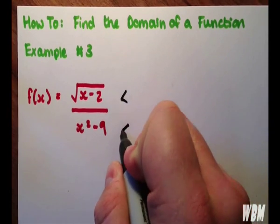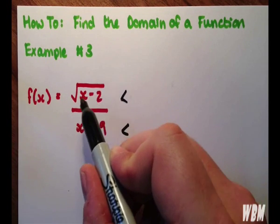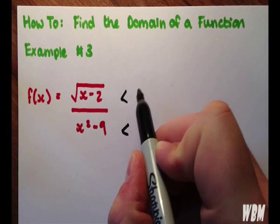We have a square root where we cannot have a negative number inside the root. We can of course have 0, but we can't have anything below 0.